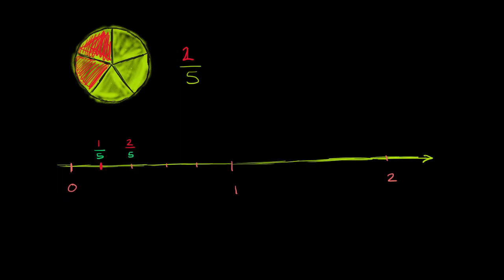And I could keep going. This right over here should be 3 over 5. This right over here, I've gone 1, 2, 3, 4 out of the five sections towards 1. So I could call this 4 fifths, 4 fifths.